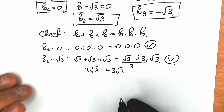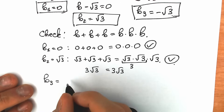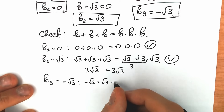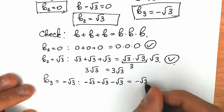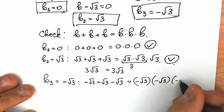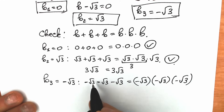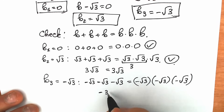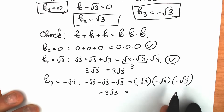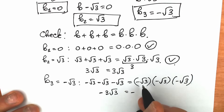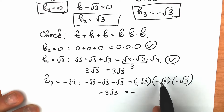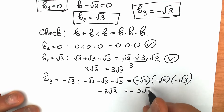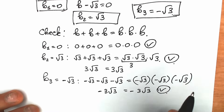Now let's check our third solution: b₃ equals minus square root of 3. We have minus √3 plus minus √3 plus minus √3 equal to minus √3 times minus √3 times minus √3. On the left side we get minus 3√3. On the right side, we have three minus signs, so the general sign will be negative. Square root of 3 times square root of 3 equals 3, and 3 times square root of 3 gives 3√3 with a negative sign — minus 3√3. All three solutions are verified.